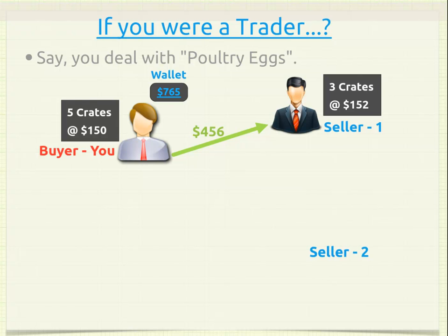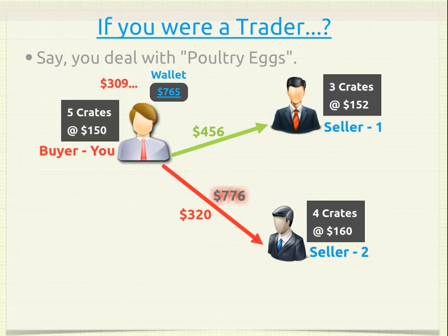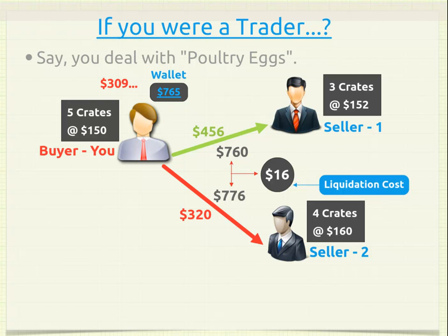Then seller 2 says they've got 4 crates at $160, which is the next best price in the market. Since you need 2 more crates, you enter into this deal and buy 2 more crates. However, you have $309 left and paying for these 2 crates costs $320, bringing your total to $776. Had seller 1 had all 5 crates, you would have paid only $760. The difference of $16 is what we refer to as the liquidation cost — the cost of not getting all 5 crates at the best market price.